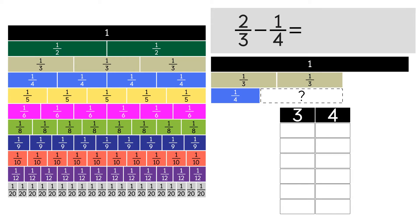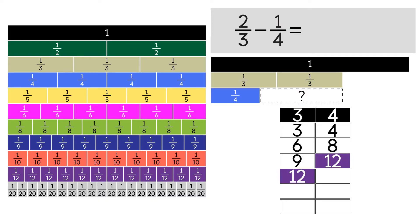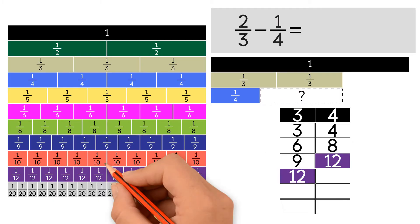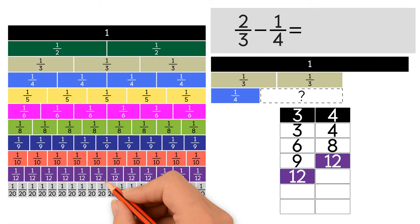First, we list the multiples of 3: 3, 6, 9, 12. Now we list the multiples of 4 until we find a common multiple with 3: 4, 8, 12. As you can see, 12 is the common multiple. So we're going to use fraction strips with 12 in the denominator.